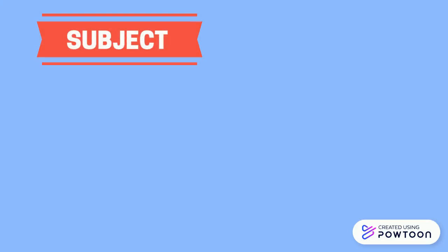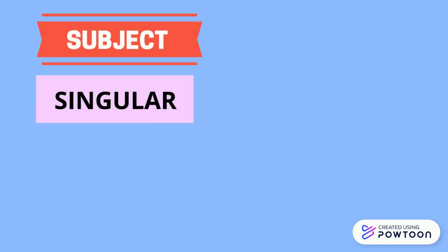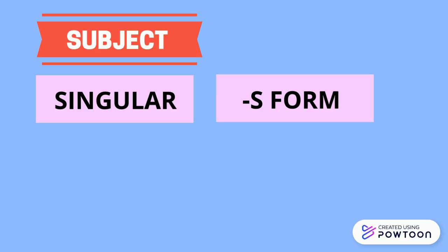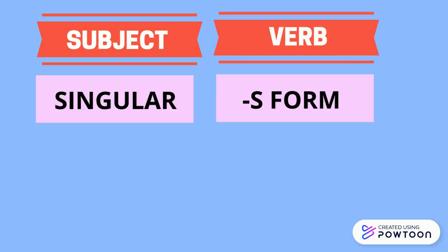The general rule in writing the present tense is: if the subject is singular, use the S form of the verb. For example, Anna is singular because it pertains to only one person. So use the verb walks — just add S at the end of the base word.